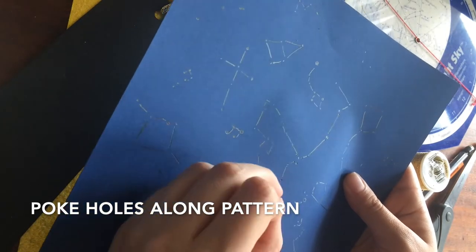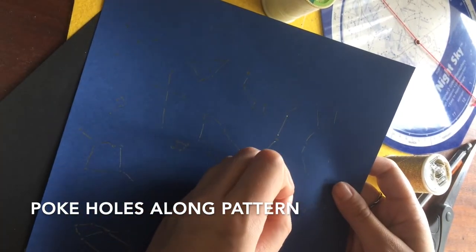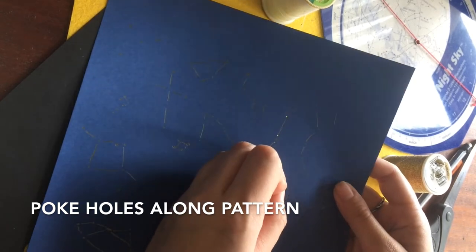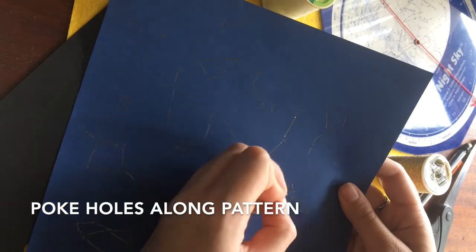First, lightly draw out your pattern using pencil. You can erase this later. Next, take your needle or a thumbtack to poke holes through the paper along your pattern. This will make it much easier to avoid mistakes later on.